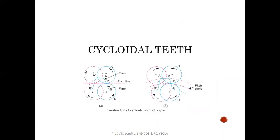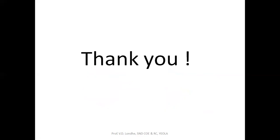So this is how the cycloidal tooth profile is generated. In summary, there are two tooth profiles: one is the involute tooth profile and another is the cycloidal tooth profile. Thank you.